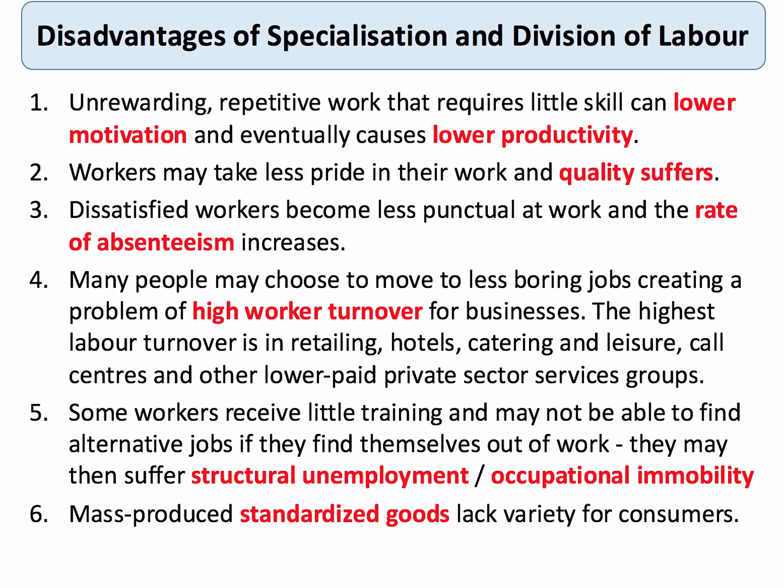Some workers who are deeply specialised in a particular job or industry may find themselves out of work because of a cyclical downturn in their sector, and they may be at risk of structural unemployment because of occupational immobility. That's quite an important macroeconomic point that comes from specialisation.